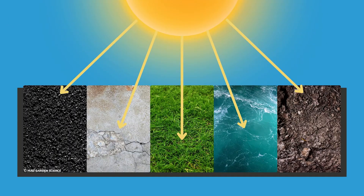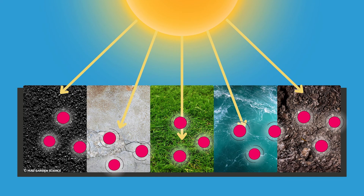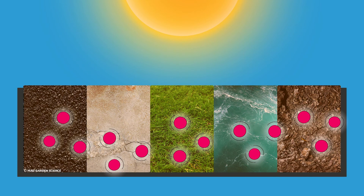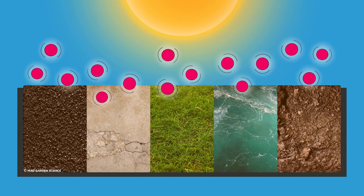The surface absorbs the sun's radiation and gains energy. That energy is felt as heat and warms the surface. The surface eventually releases some of this infrared radiation or heat energy to the atmosphere above. As the temperature of a surface warms, it will release more infrared radiation, regardless of what materials make up that object, through convection and conduction.